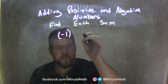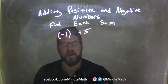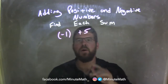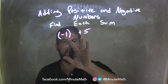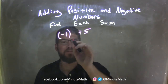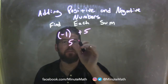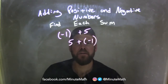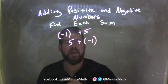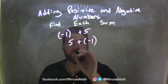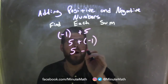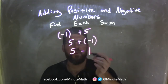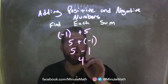Negative 1 plus 5. We know by the commutative property that we can flip negative 1 and 5, so I can rearrange this to be 5 plus a negative 1. Adding a negative is the same thing as subtraction, so we have 5 minus 1 instead of 5 plus a negative 1. And 5 minus 1 is just 4.